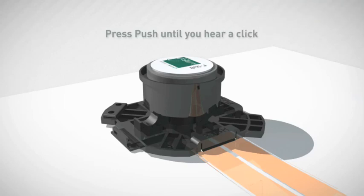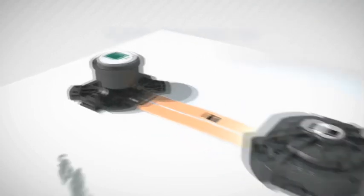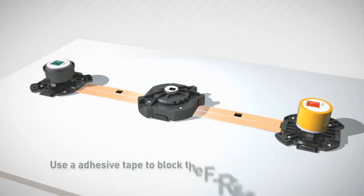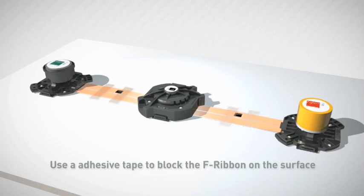And press PUSH until you hear a click. Screw all the products using the foreseen holes. Strongly recommended. If you wish, you can use a hard adhesive tape to block the F-ribbon on the surface.